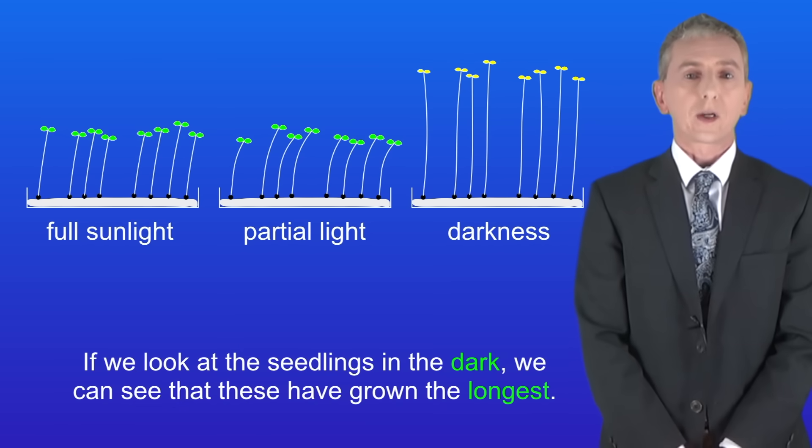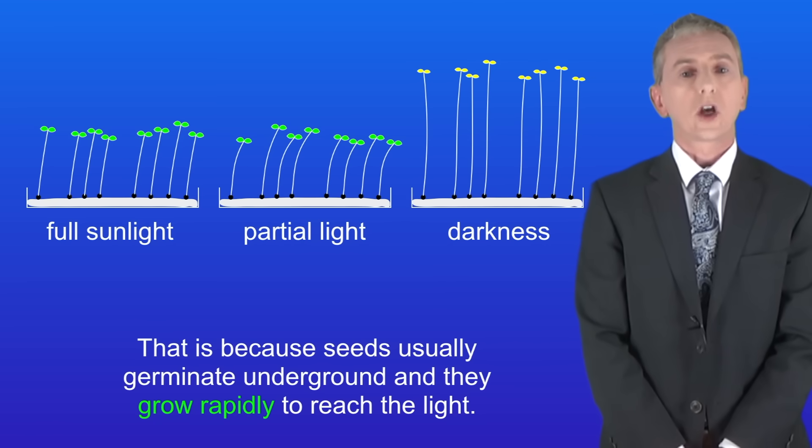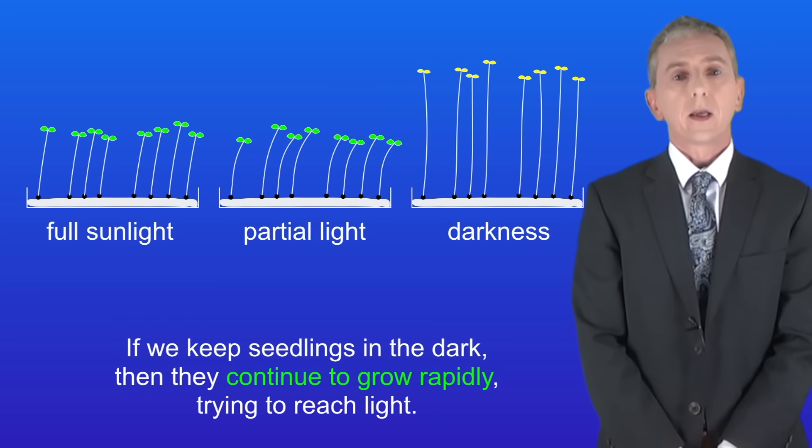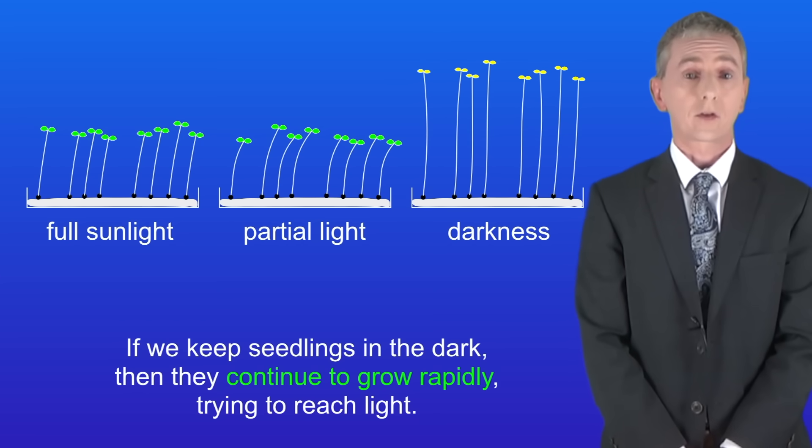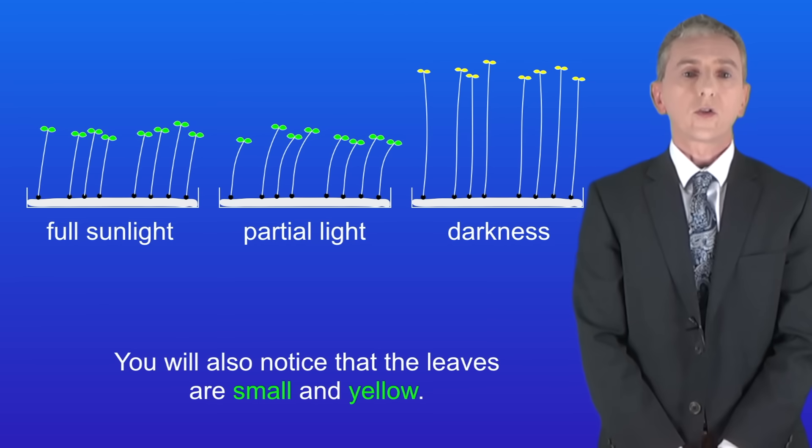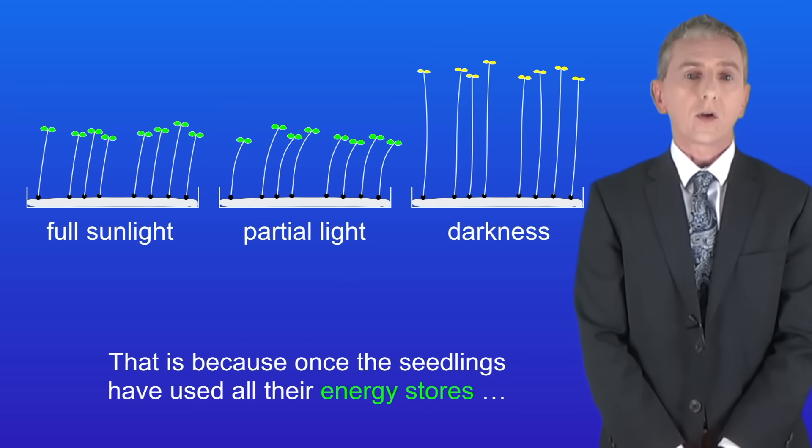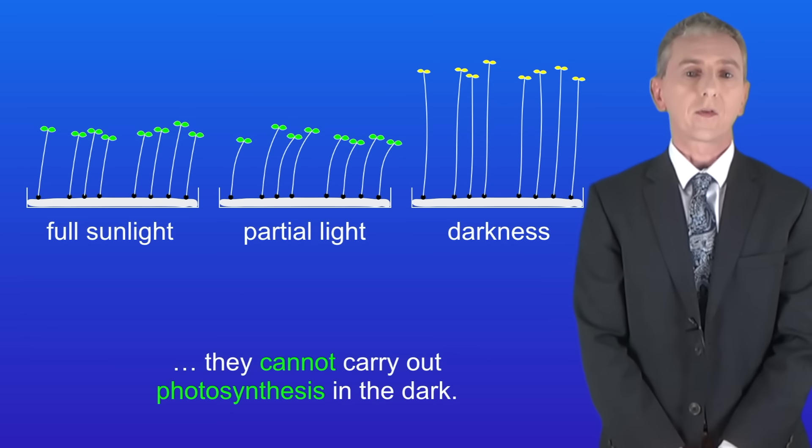If we look at the seedlings in the dark, we can see that these have grown the longest. That's because seeds usually germinate underground and they grow rapidly to reach the light. If we keep seedlings in the dark then they continue to grow rapidly trying to reach light. You'll also notice that the leaves are small and yellow. That's because once the seedlings have used all their energy stores they cannot carry out photosynthesis in the dark.